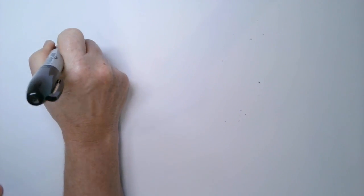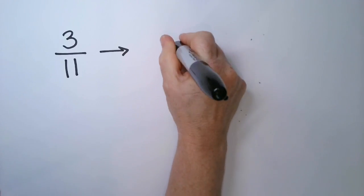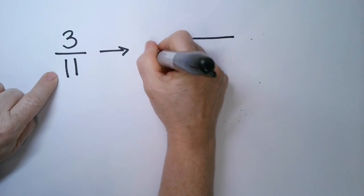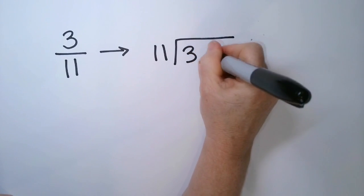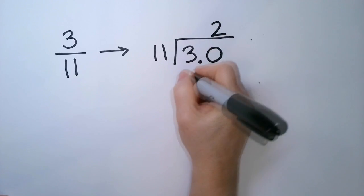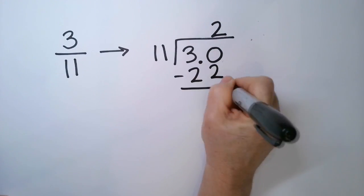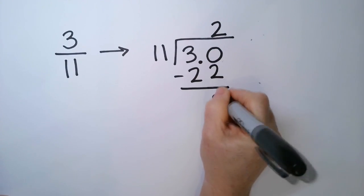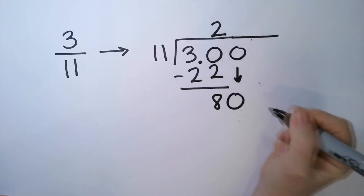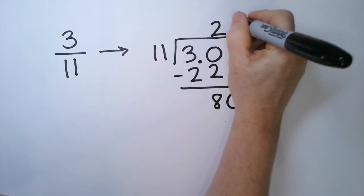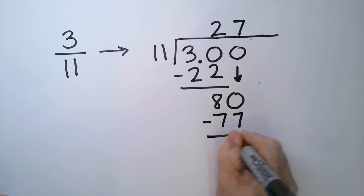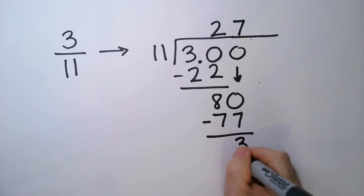Let's take a look at 3 over 11. So the 3 is going to go in the box and 11 goes outside. We're going to add a decimal point here. 11 goes into 30 twice minus 22. And I have a difference of 8. So I'm going to add another 0. Bring it down. 11 goes into 80 7 times. So we have 77.